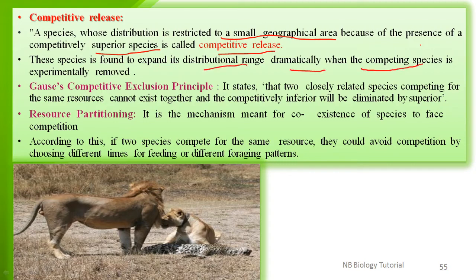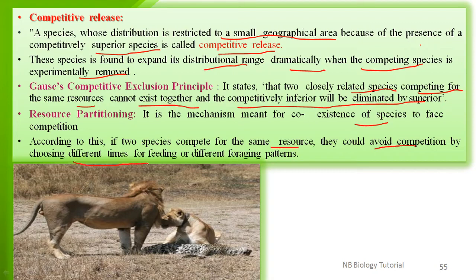The competitive exclusion principle states that two closely related species competing for the same resources cannot coexist, and the competitively inferior species will be eliminated by the superior one. Resource partitioning is a mechanism for the coexistence of species facing competition. If two species compete for the same resources, they can avoid competition by choosing different times for feeding or different foraging patterns.